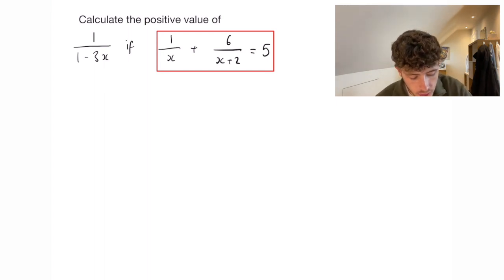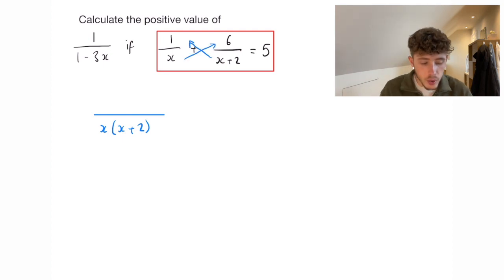So finding a common denominator is just going to be x bracket x plus 2, like this. And then we cross multiply, so we multiply the x plus 2 up there and the x up here. I've put them over the same denominator because ultimately that's what we do anyway. So x plus 2 plus 6x is equal to 5.